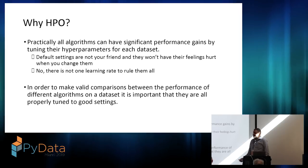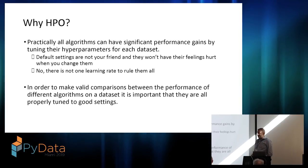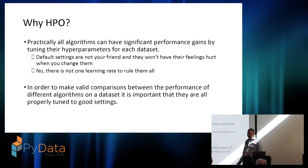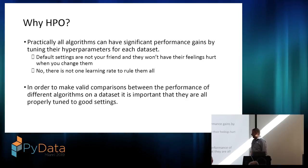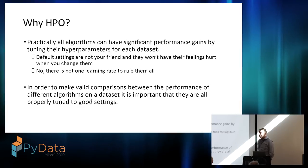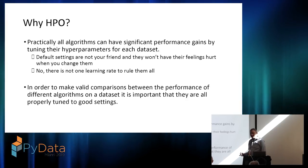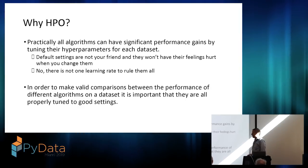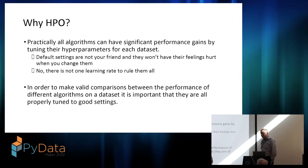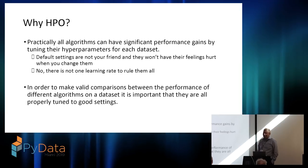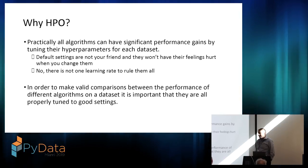So why HPO? The most obvious answer is that if you choose good hyperparameters you'll get better model performance — that's a no-brainer. Default settings will usually give some sort of result but they're really not your friend, and there is not one learning rate to rule them all. A more overlooked reason is that if you're trying to make valid comparisons between different models for the same dataset, it's totally unfair to compare algorithms unless you spend equal computational resources tuning their hyperparameters. It wouldn't be uncommon to claim a new algorithm beats others because you tuned it thoroughly while leaving the others on default settings. So it's really important, especially in research, to use HPO to make fair comparisons.